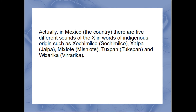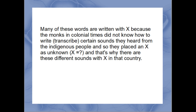However, since the sound SASH no longer exists in Spanish, the pronunciation evolved to M-E-X-I-C-O. Actually, in Mexico the country, there are five different sounds of the X in words of indigenous origin such as Xochimilco, Jalpa, Michiote, Tuxpan, and Virrarica. Many of these words are written with X because the monks in colonial times did not know how to transcribe certain sounds they heard from the indigenous people, and so they placed an X as unknown.